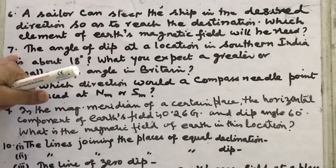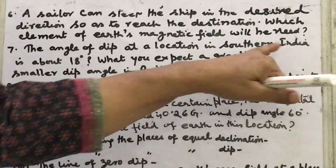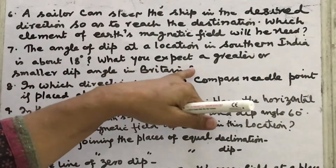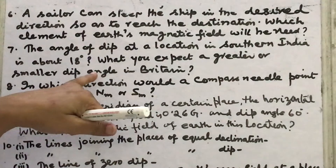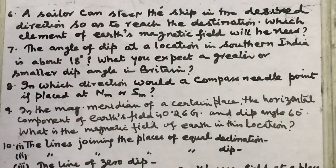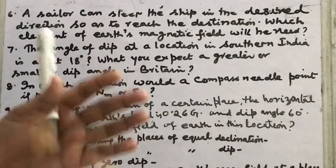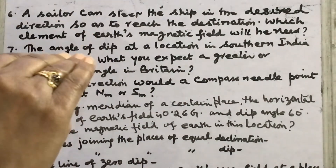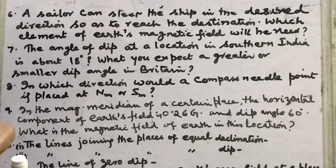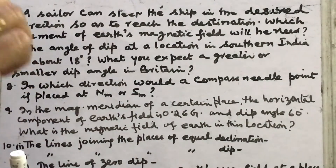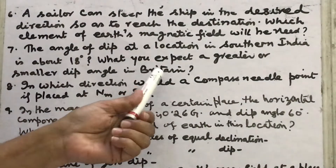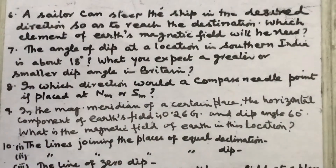Seventh question: the angle of dip at a location in southern India is about 18 degrees. What dip angle would you expect in Britain — greater or smaller? Britain is near the north pole, at about 70 degrees latitude, while the north pole is at 90 degrees. So the dip angle in Britain will be greater — about 70 degrees.